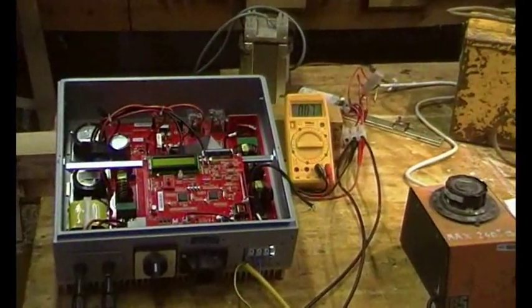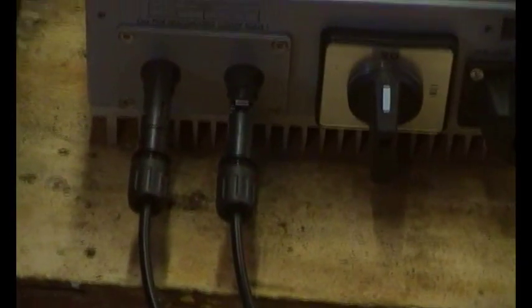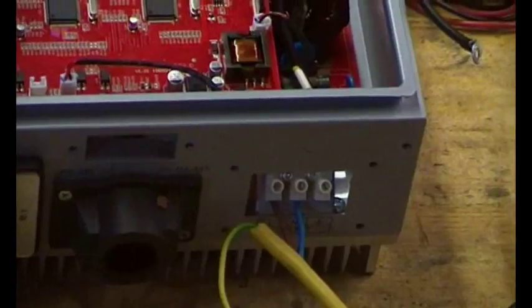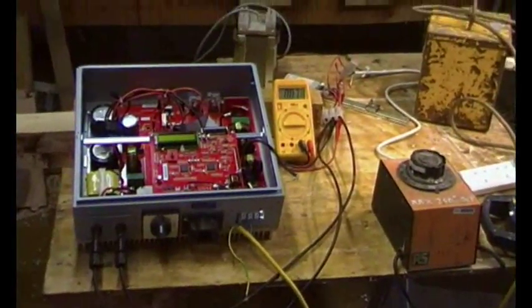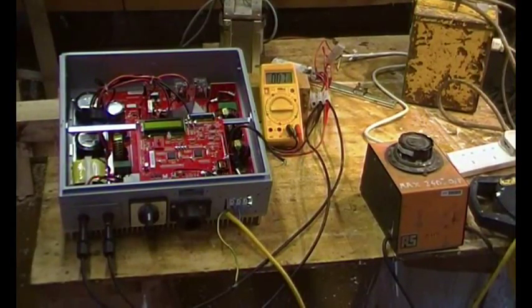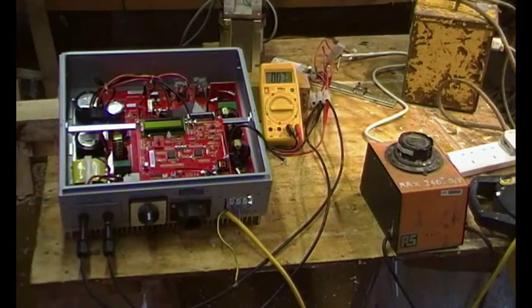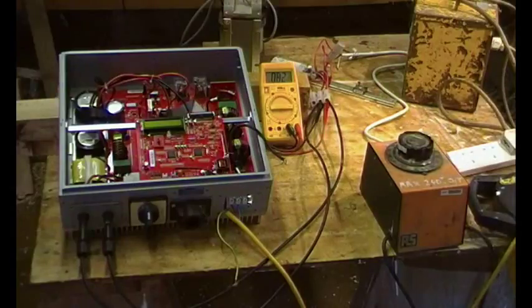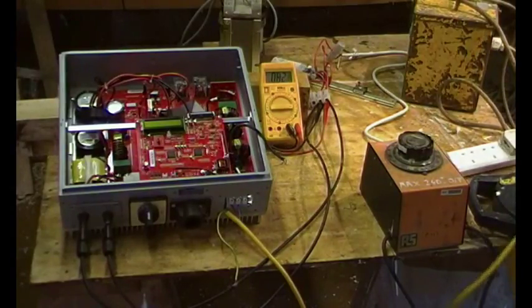Let's see how we get on with that. We can see the variac just about. So here we go, on this Growatt we've got the DC input positive and negative, and we've got the mains input, live and neutral. Okay, let's see what happens. We want the DC to be connected first, so as you can see, DC volts are going up. Let's connect the mains.